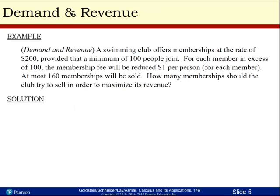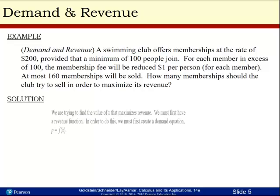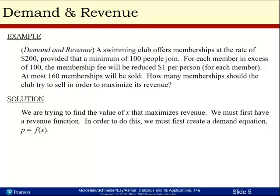Let's do a demand and revenue problem. A swimming club offers memberships at the rate of $200 provided that a minimum of 100 people join. For each member in excess of 100, the membership fee will be reduced $1 per person for each member. At most, 160 memberships will be sold. How many memberships should the club try to sell in order to maximize its revenue?